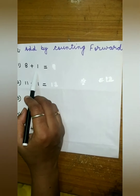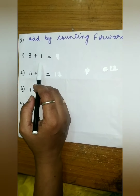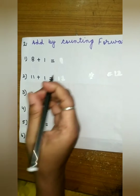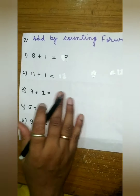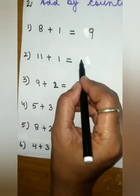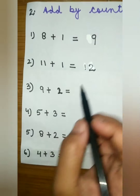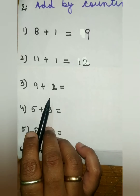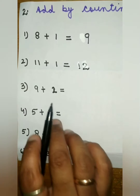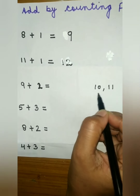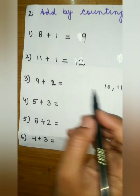The first example is 8 plus 1. Count one number after eight — what comes after eight? Nine. Write nine here. The next example is 9 plus 2. Count two numbers after nine: ten and eleven. So the answer is eleven.